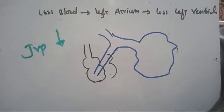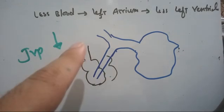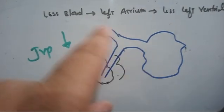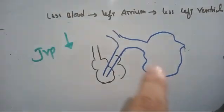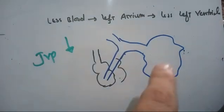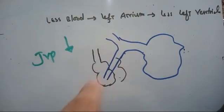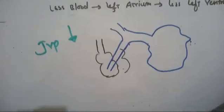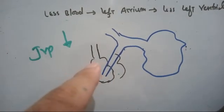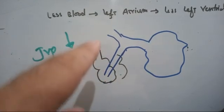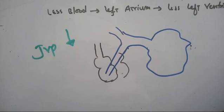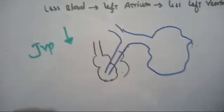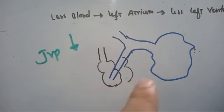JVP decreases during inspiration. Consider the jugular system: this is the internal jugular vein, the right atrium, the right ventricle, the pulmonary trunk, and the pulmonary arteries. During inspiration, the lung expands, the vessels in the lung dilate, and pressure falls. There is sucking of blood from the right ventricle, so the right ventricle empties. If the right ventricle empties, the right atrium empties, blood comes down, and the blood from the jugular system also falls, causing decreased JVP.